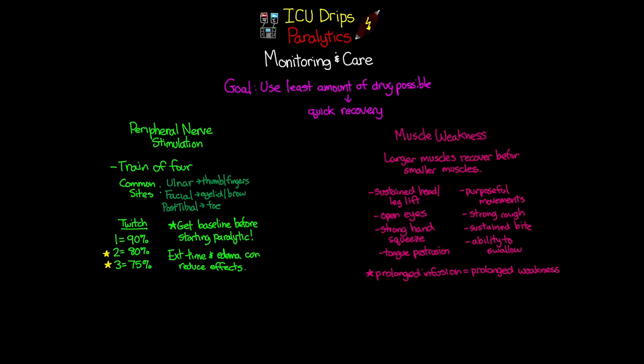Patients on prolonged infusions can expect prolonged weakness as a result. Key side effects include myopathy and disuse atrophy. This is especially important to monitor in patients who have been on these infusions long-term, as well as those on concurrent steroids, which can further contribute to myopathy and disuse atrophy. Make sure you're checking this thoroughly to get a good assessment of how they're coming off the paralytics.